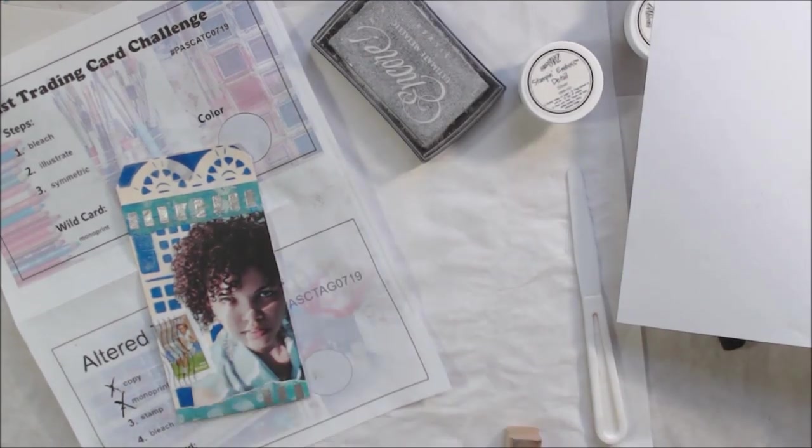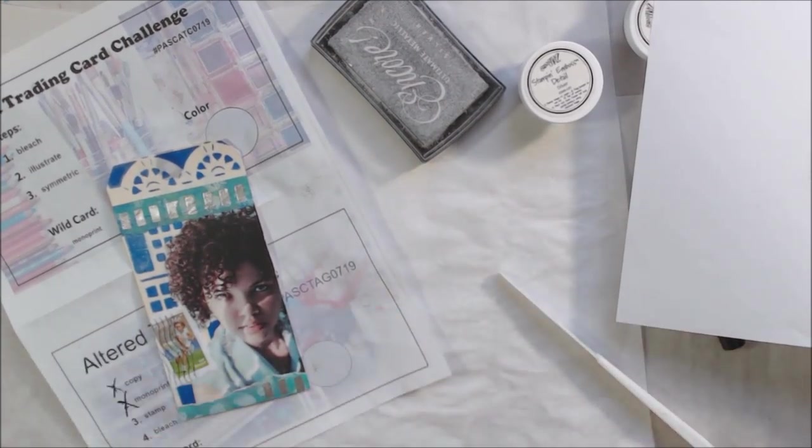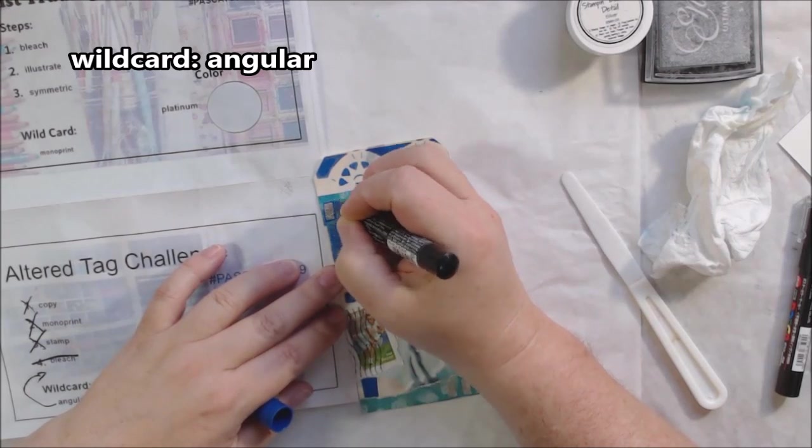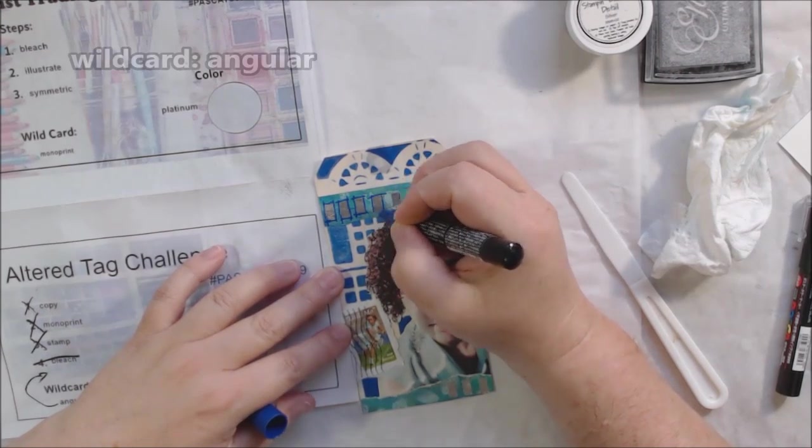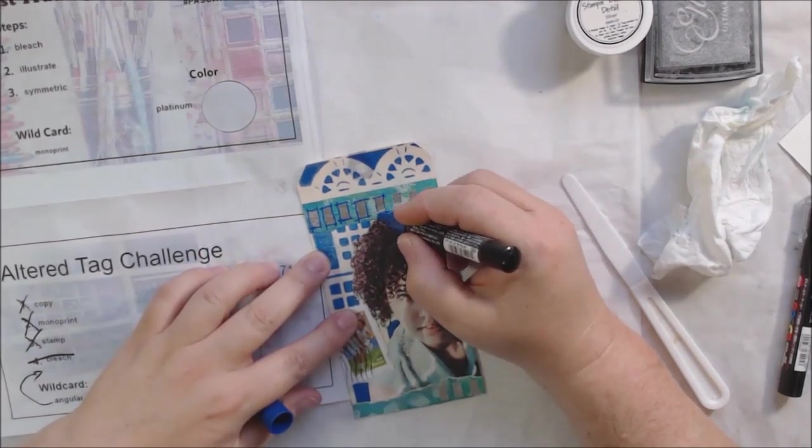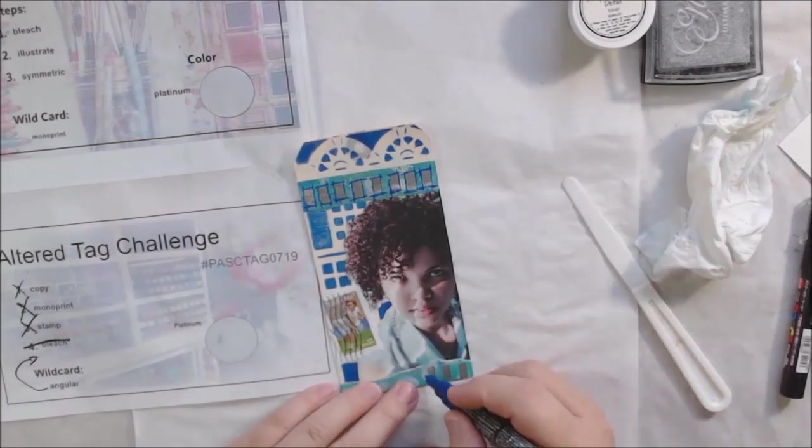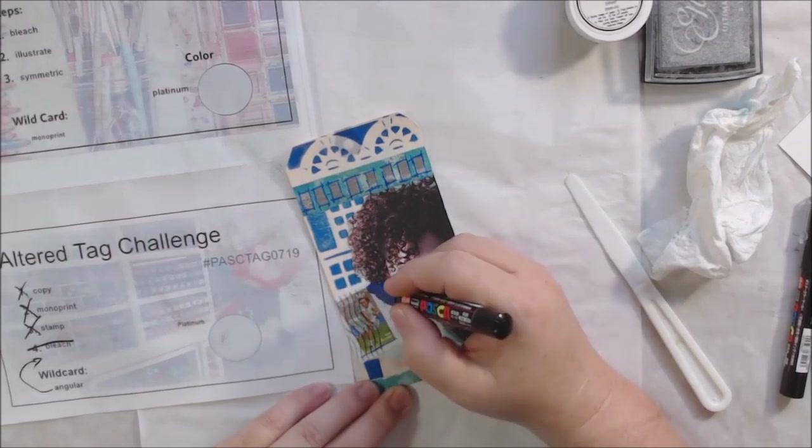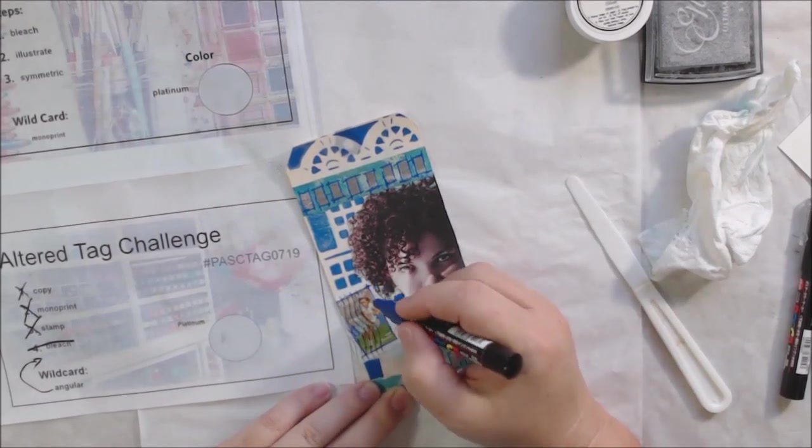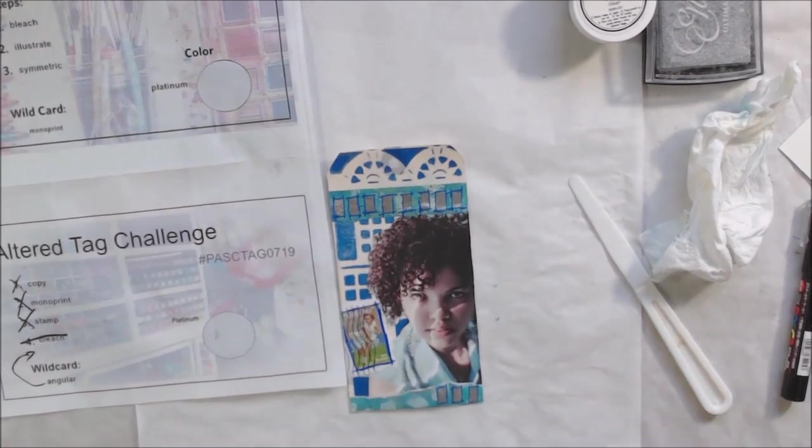So I mixed embossing powder in silver and gold together and then I stamped these rectangles which are a very angular shape and then embossed them with that mixture. It still just kind of looks like silver but to me platinum looks a lot like silver unless you compare the two together and I don't have a product that's the color of platinum.